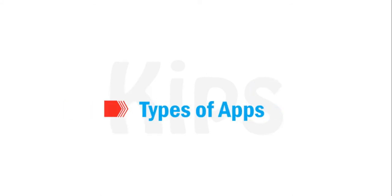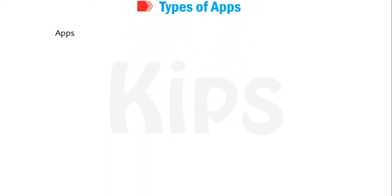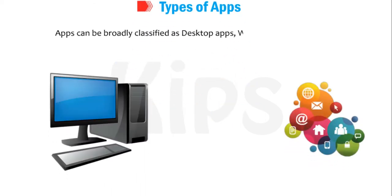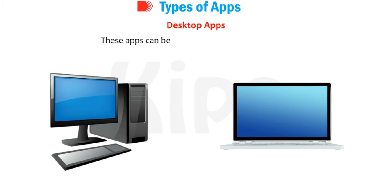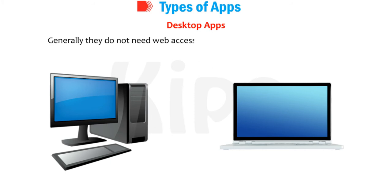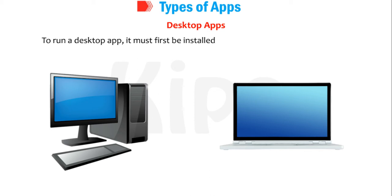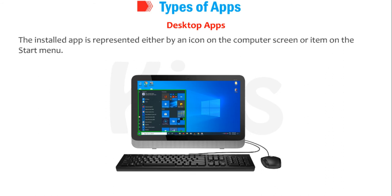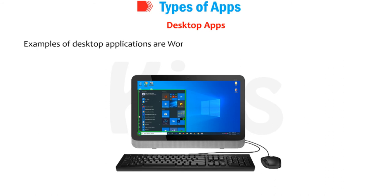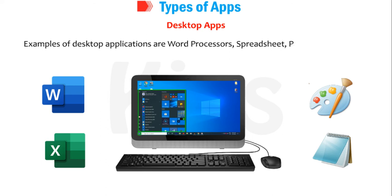Let's talk about the types of apps. Apps can be broadly classified as desktop apps, web apps, or mobile apps. Desktop apps can be used on a desktop or a laptop. Generally, they do not need web access and run independently on a computer. To run a desktop app, it must first be installed on the desktop or laptop. The installed app is represented either by an icon on the computer screen or an item on the start menu. Examples of desktop applications are word processors, spreadsheet, paint, and notepad.